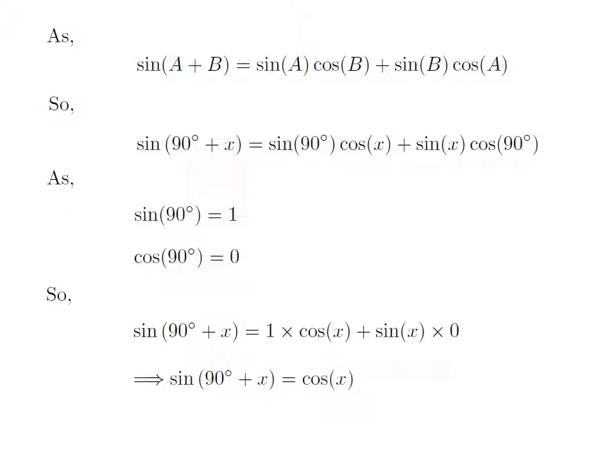As 1 into cosine of x is equal to cosine of x and sine of x into 0 is equal to 0.